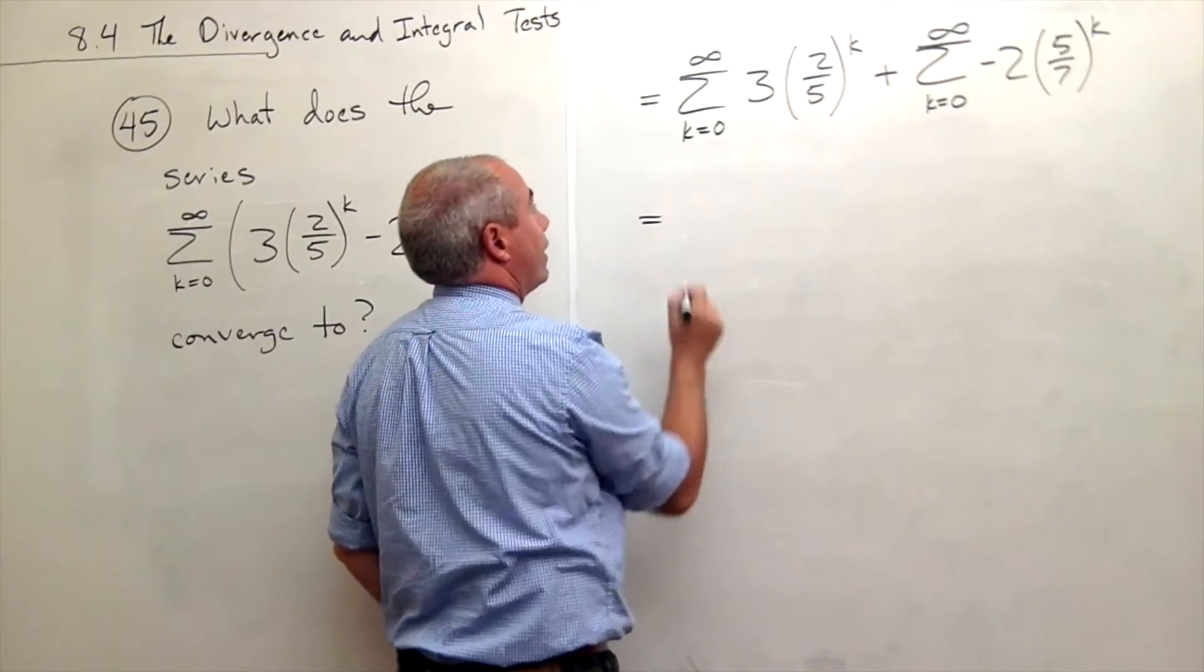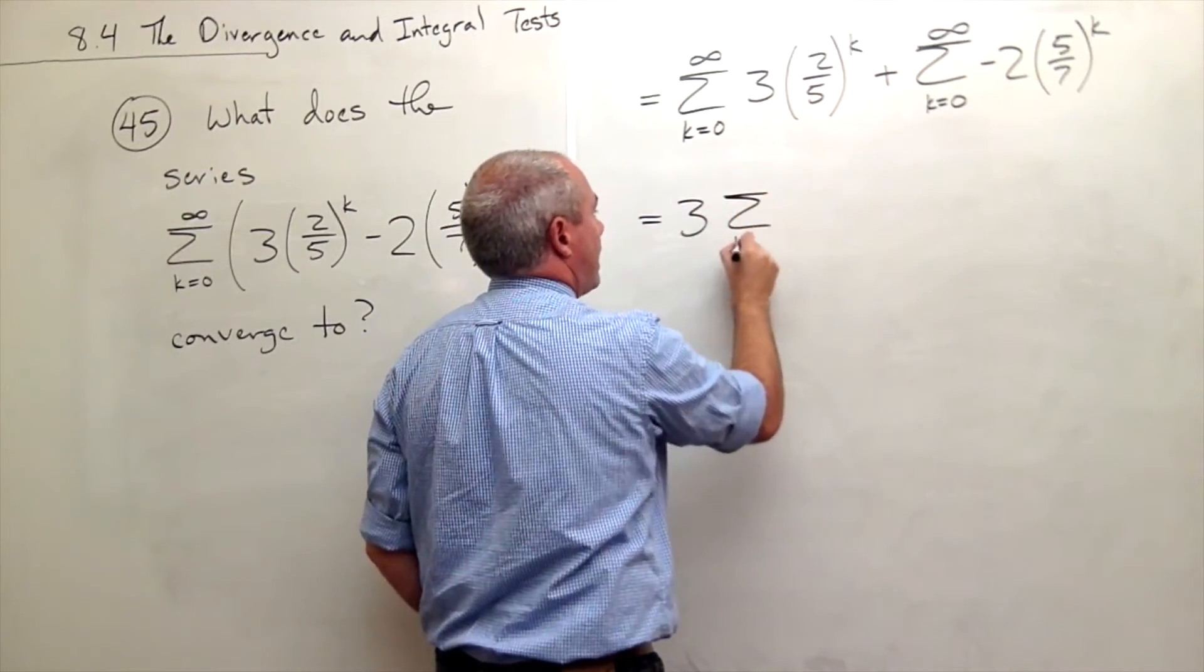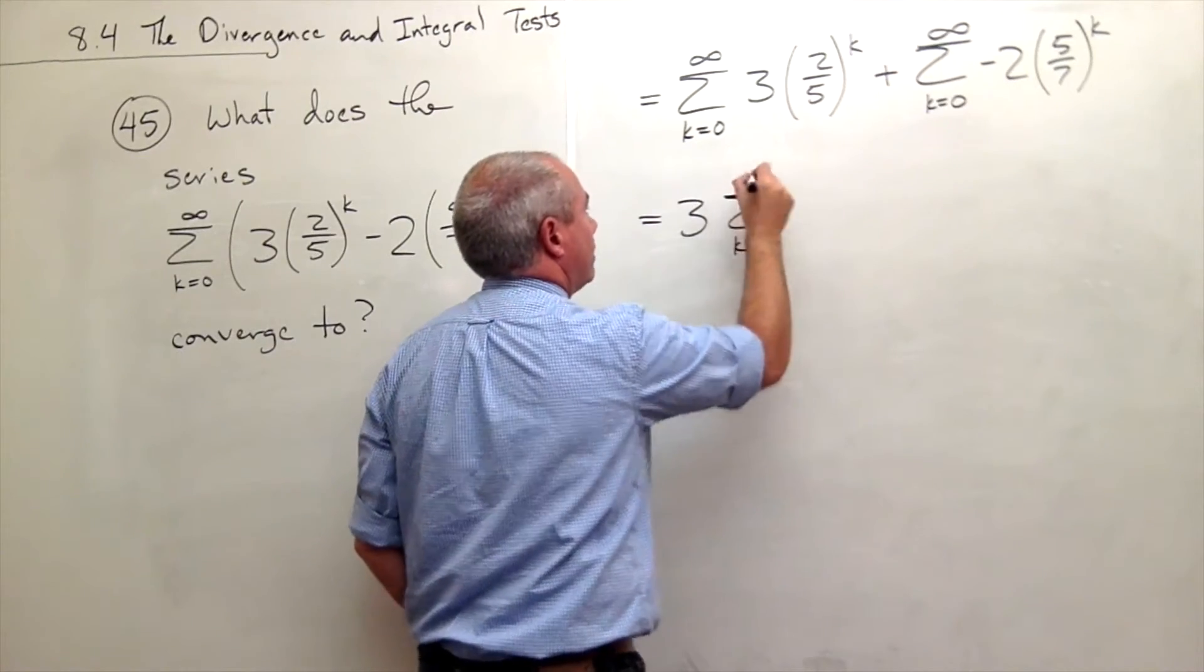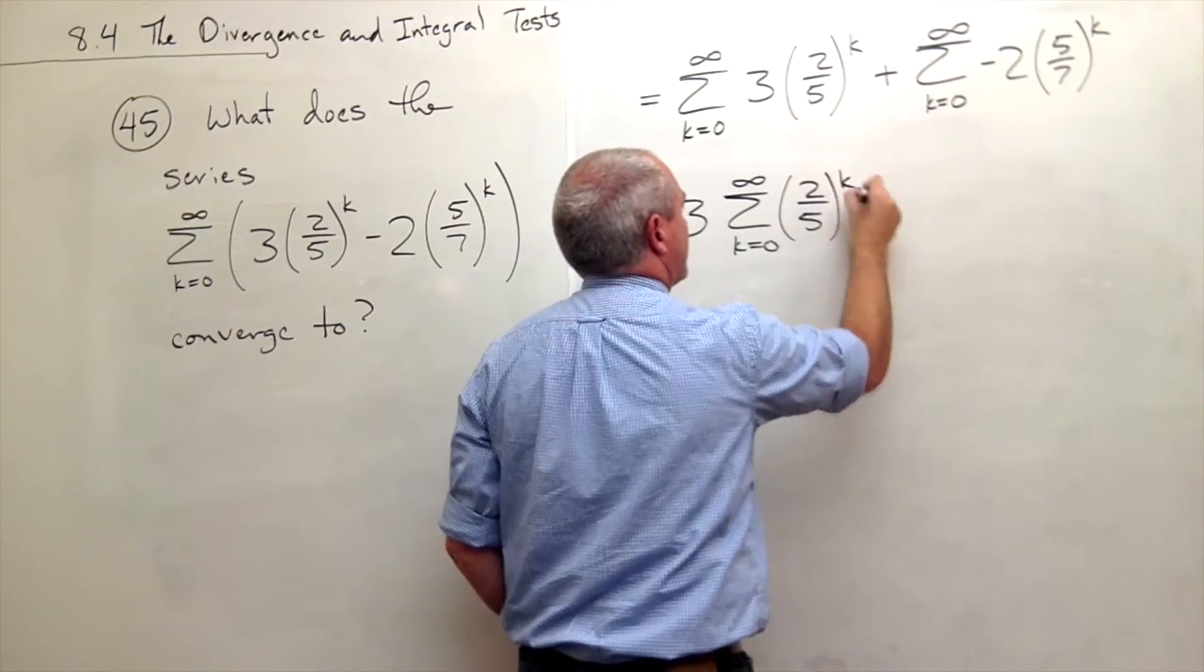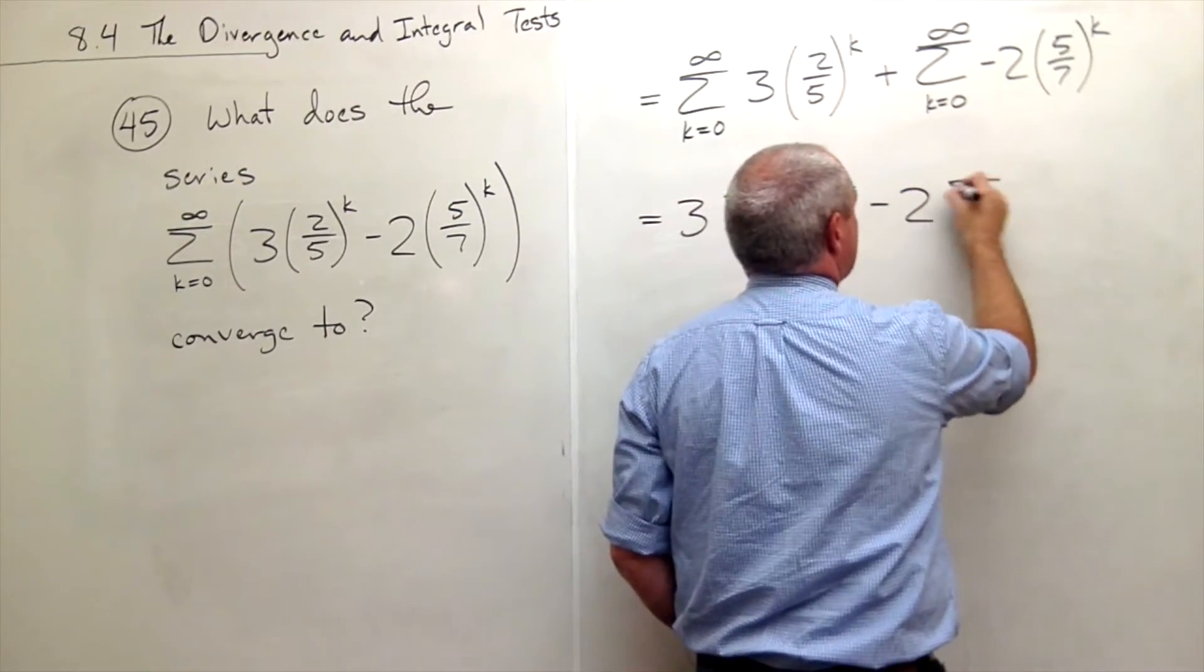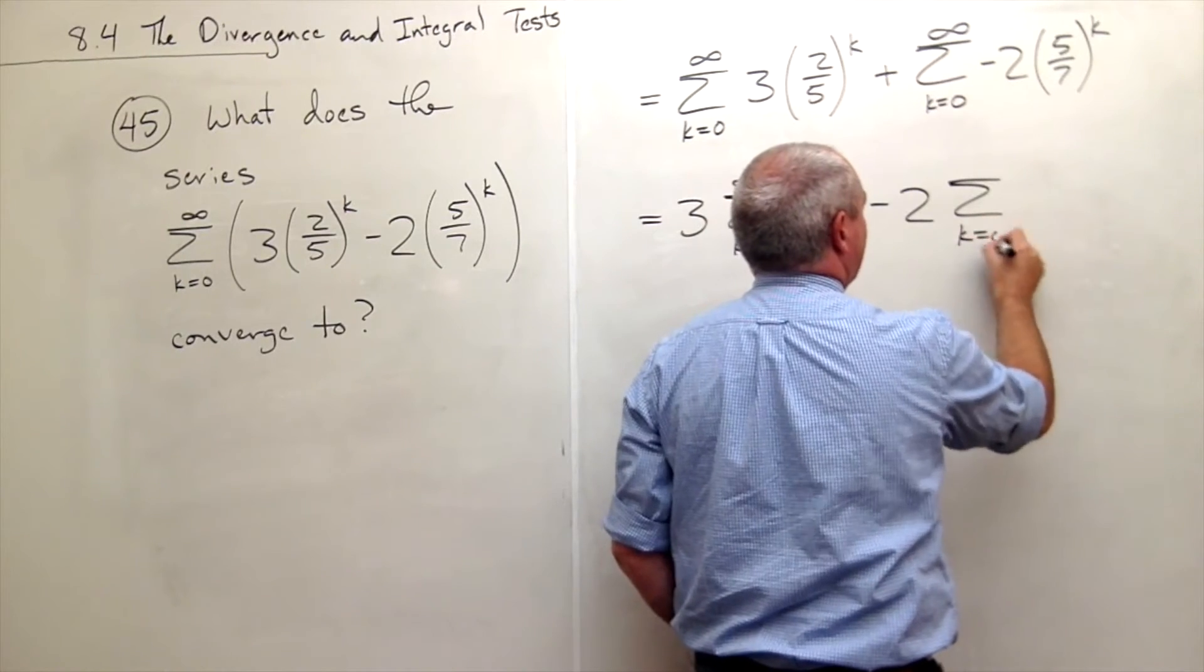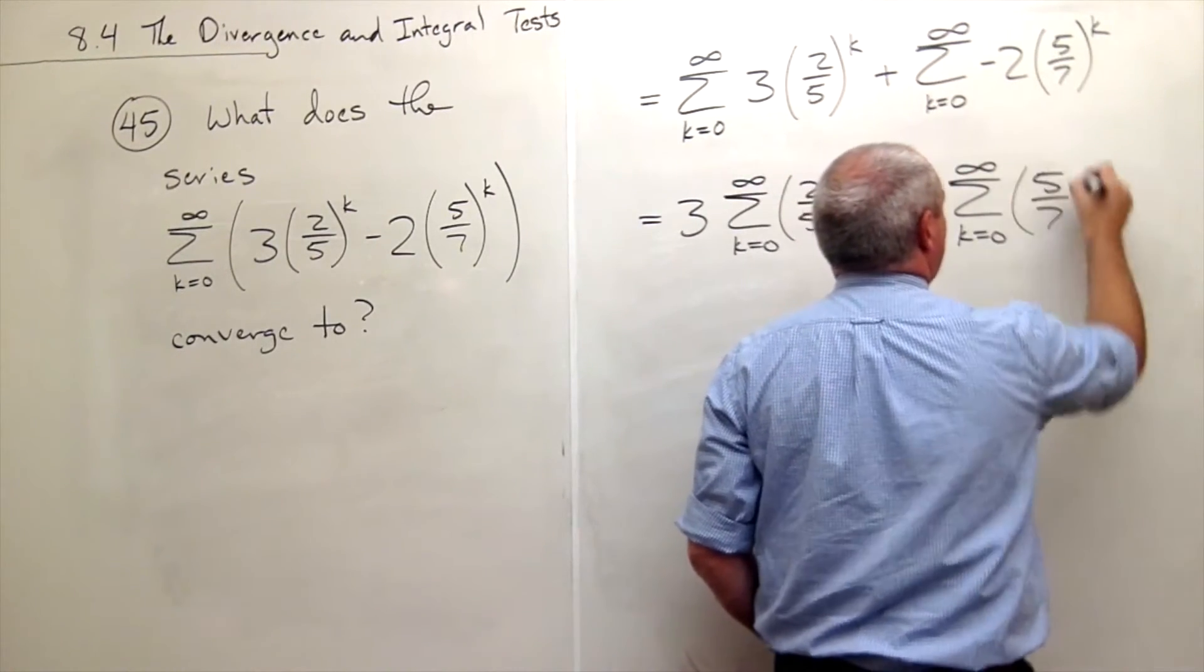So I could rewrite this as three sum k going from zero to infinity of two-fifths raised to the k minus two times the sum k going from zero to infinity of five-sevenths raised to the k.